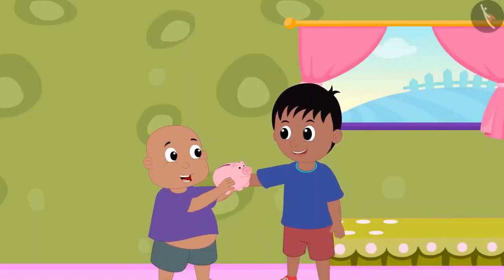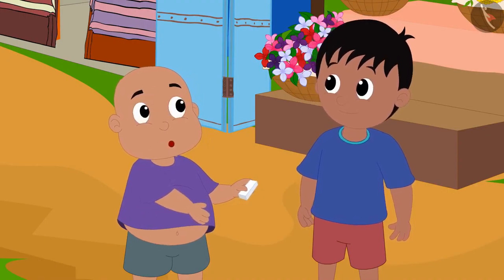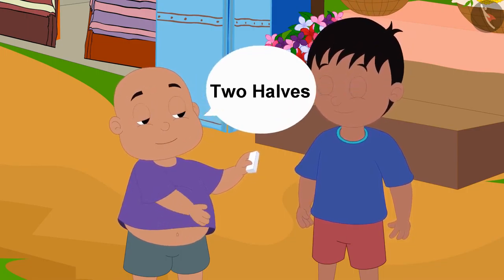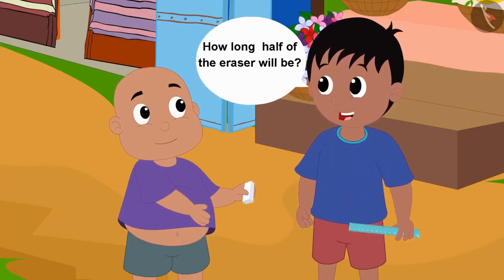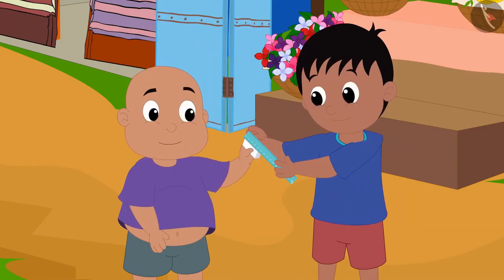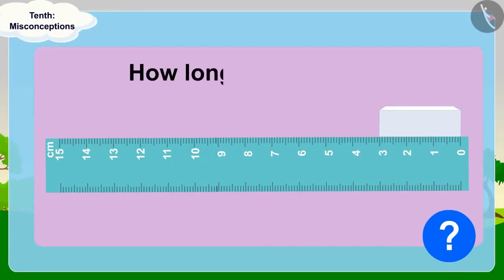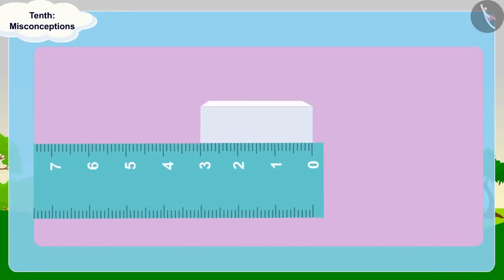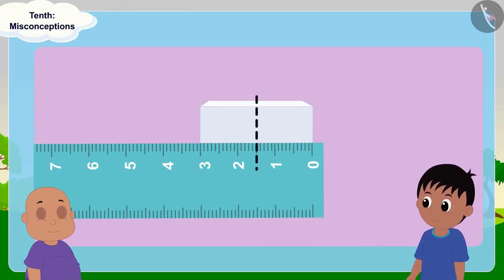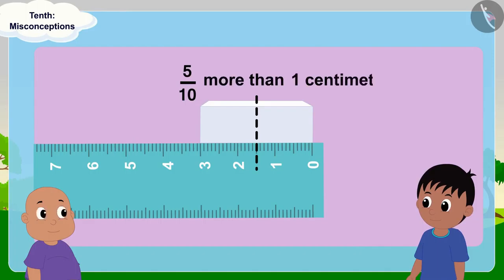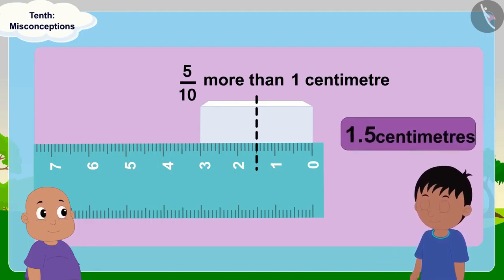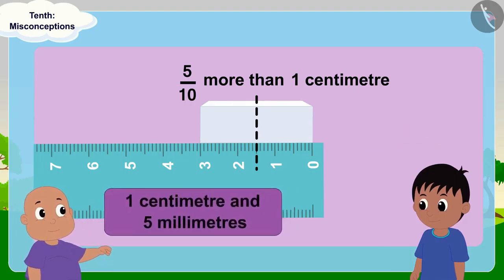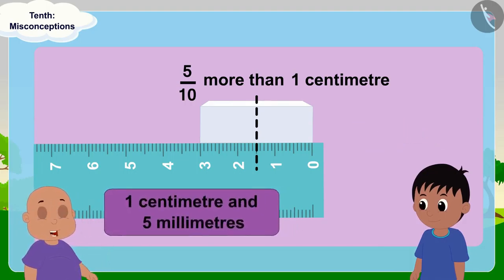Raju and Babalu collected some money and bought an eraser from the market. Babalu said: Raju, let us divide this eraser in two halves. Raju said: Okay, let's measure it using a ruler so that we know how long half of the eraser will be. Raju measured the eraser with a ruler. Children, can you tell how long the eraser is? The eraser is three centimetres long. Raju and Babalu saw that half of the eraser is five tenths more than a centimetre. Raju said: Babalu, half of the eraser is 1.5 centimetres long. Babalu replied: No, half of the eraser is one centimetre and five millimetres long.